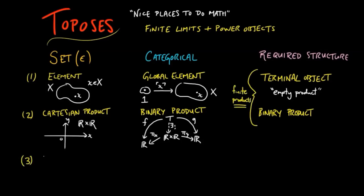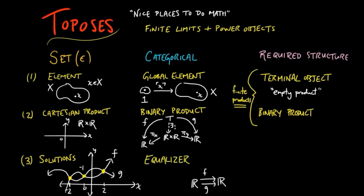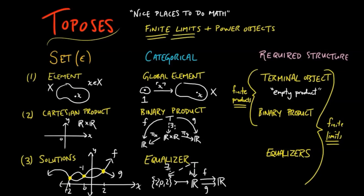Three, such a big part of mathematics in school is finding roots of a function, or equivalently, finding the intersection of two functions. So categorically, a quote-unquote solution of two morphisms is the equalizer of the morphisms. The existence of finite products and equalizers is equivalent to the existence of finite limits in a category, which is the first requirement for a category to be a topos. So we have left to motivate power objects.